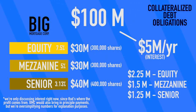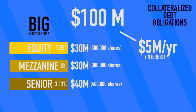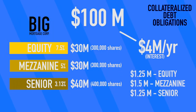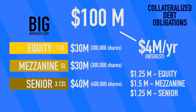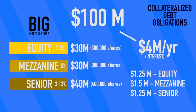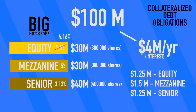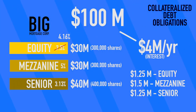However, let's say 20% of people default, and from now on Big Mortgage Corp can only bring in about 80% of the original $5 million in interest each year, or $4 million per year. In this case, the senior tranche is still going to get its $1.25 million, and the mezzanine is going to get its full $1.5 million. But equity — they're the losers here. Equity shares get back only $1.25 million, what's left over, and that equates to $4.16 per share. They just saw their return go from 7.5% to 4.16% for the rest of the life of the share, and their share is worth less than the mezzanine share.